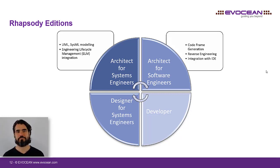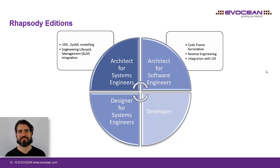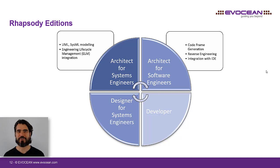On the same level but for software developers, we have the Architect for Software Engineers. It comprises the same functions as the Architect for Systems, but has some more features interesting for software development. In addition, it allows you to generate architectural code frames for static elements like classes and objects. It synchronizes model and code, so you can work either in the code or in the model. It also allows you to reverse engineer existing code into a UML model. If you want to compile your code, you need an additional IDE, but integrations for Visual Studio and Eclipse are provided.